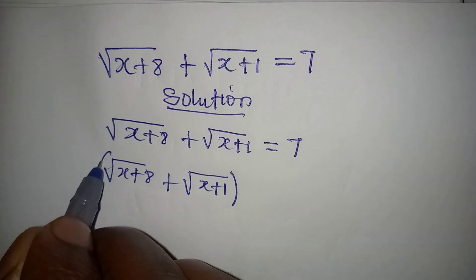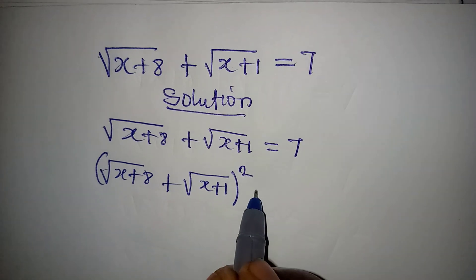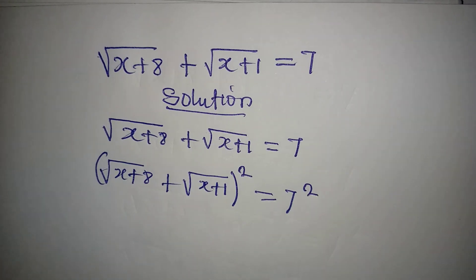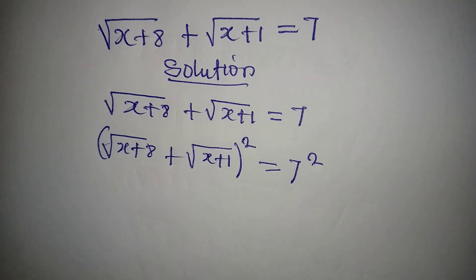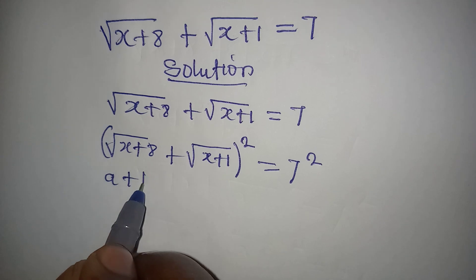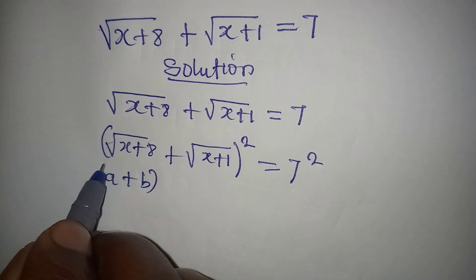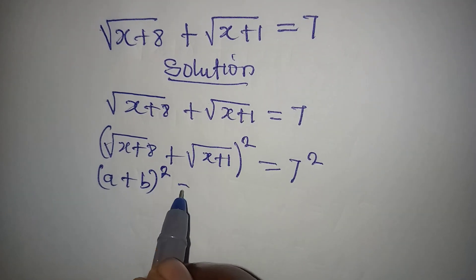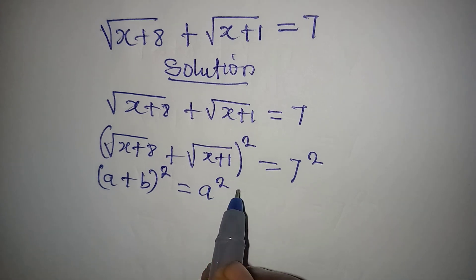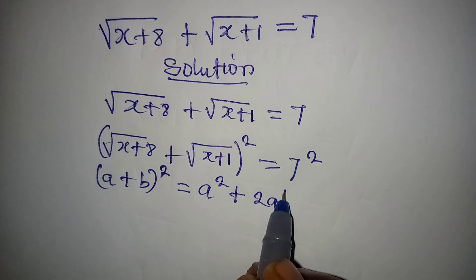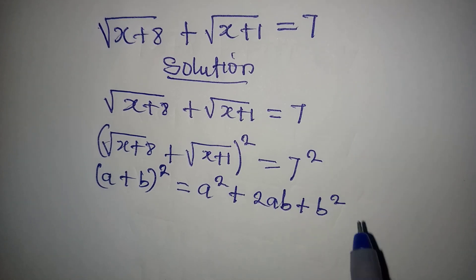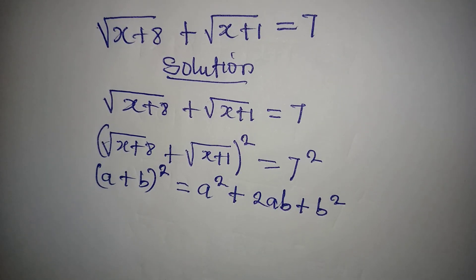Do you remember this identity? If you have (a + b) squared, this is the same thing as a squared plus 2ab plus b squared. Yes, this is how it is.